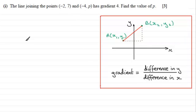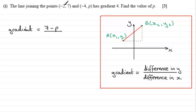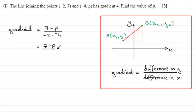So for this question, the gradient equals — doing the difference in the y coordinates, we'll start with the seven, so we go seven minus p, and we divide this by the difference in the x coordinates. Starting with the minus two, we've got minus two minus minus four. It wouldn't matter if you did it the other way around — you could do p minus seven as long as you divide it by minus four minus minus two; you'll get exactly the same answer. So what we've got is seven minus p divided by minus two plus four, which gives us two.